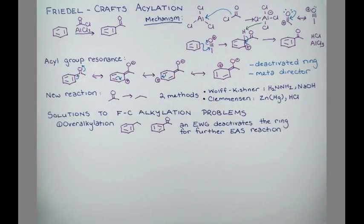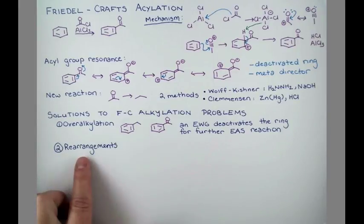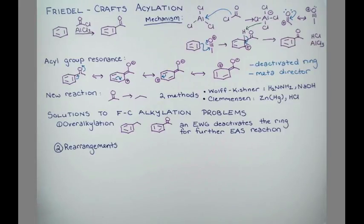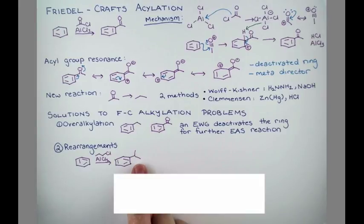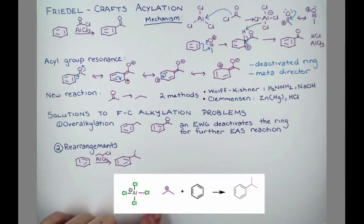Remember carbocation rearrangements were a problem with Friedel-Crafts alkylation? Even if we wanted to make a straight chain on here of carbon atoms, we couldn't because of carbocation rearrangements. The compound would rearrange to form a more stable carbocation.